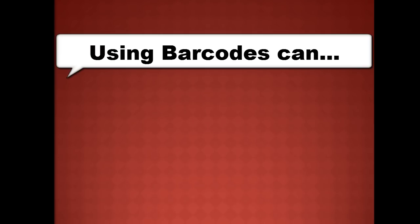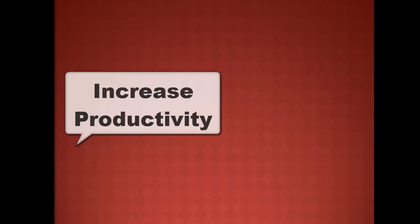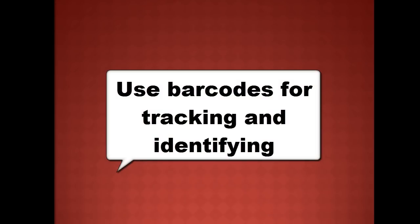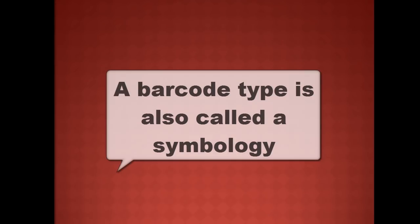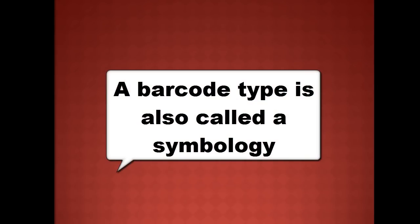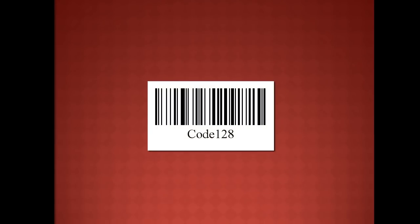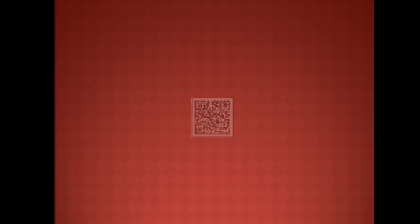When barcode technology is used in business processes, procedures are automated to increase productivity and reduce human error. Barcoding should be used whenever there is a need to accurately identify or track something. A barcode type, known as a symbology, is a protocol for arranging bars and spaces that make up a particular kind of barcode, such as Code 128, Code 39, Data Matrix, and QR code.